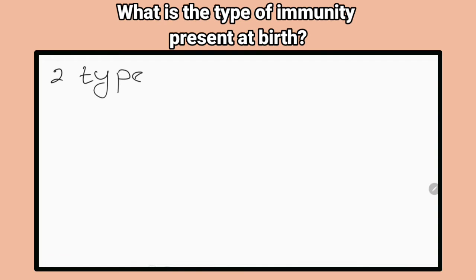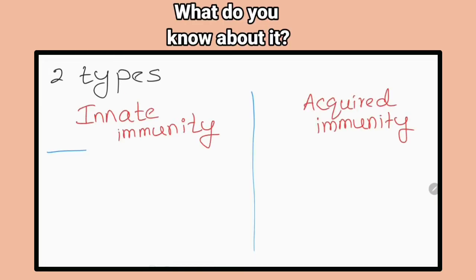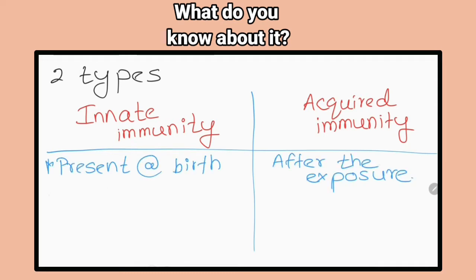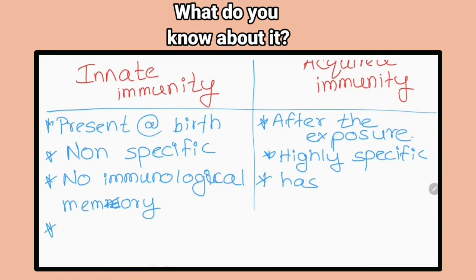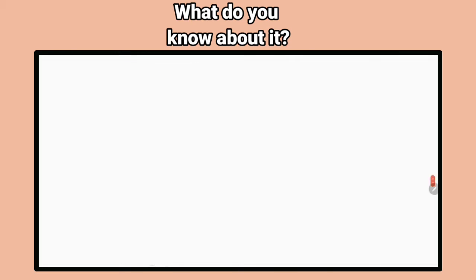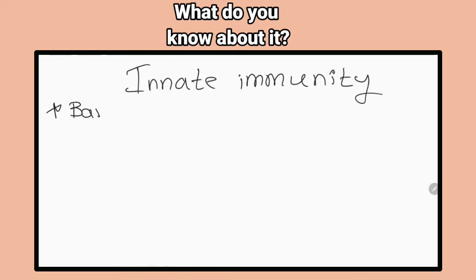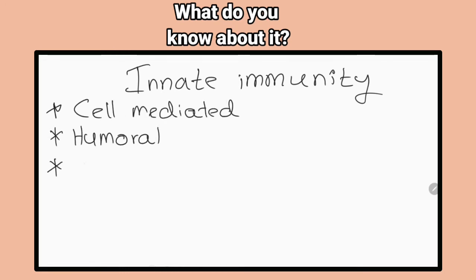What is the type of immunity present at birth? Innate immunity. It is present even before any exposure to pathogens and is effective from the time of birth. It involves non-specific responses to pathogens. It can be cell mediated, barrier defense or humoral.